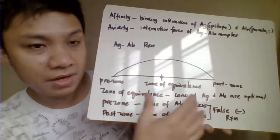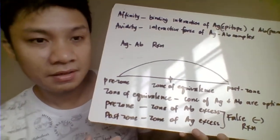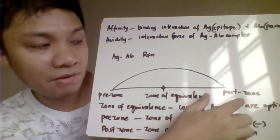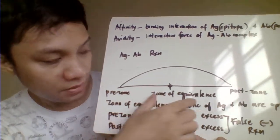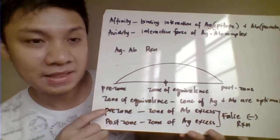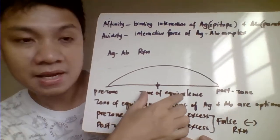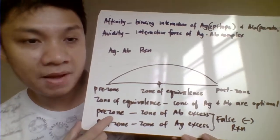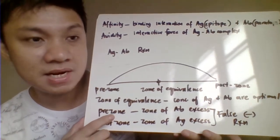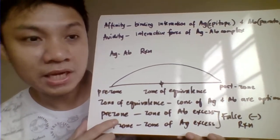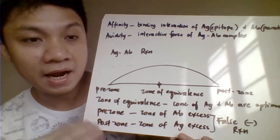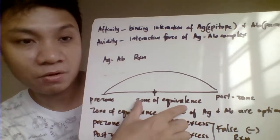In the zone of reactions, we have the pre-zone, the zone of equivalence, and the post-zone. The zone of equivalence is where we are able to visualize the antigen-antibody reaction; it is the area where antigen and antibody concentrations are equal, and therefore agglutination can be visualized.